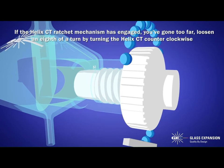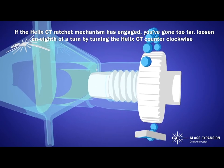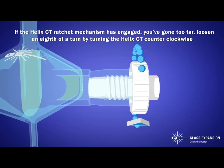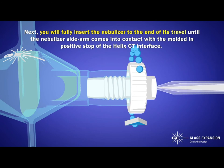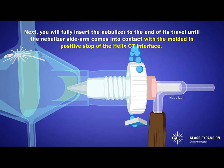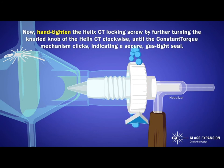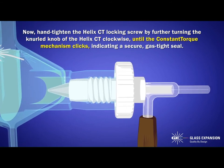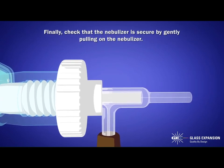If the Helix CT ratchet mechanism has engaged, you've gone too far — loosen an eighth of a turn by turning the Helix CT counterclockwise. Next, fully insert the nebulizer to the end of its travel until the nebulizer sidearm comes into contact with the molded-in positive stop of the Helix CT interface. Now hand-tighten the Helix CT locking screw by further turning the knurled knob clockwise until the constant torque mechanism clicks, indicating a secure, gas-tight seal. Finally, check that the nebulizer is secure by gently pulling on the nebulizer.